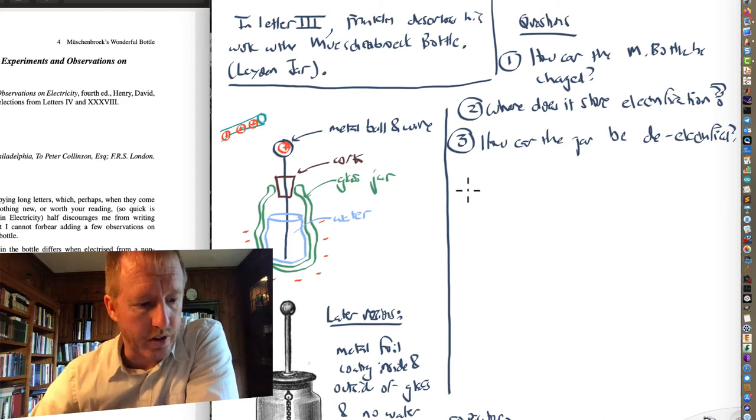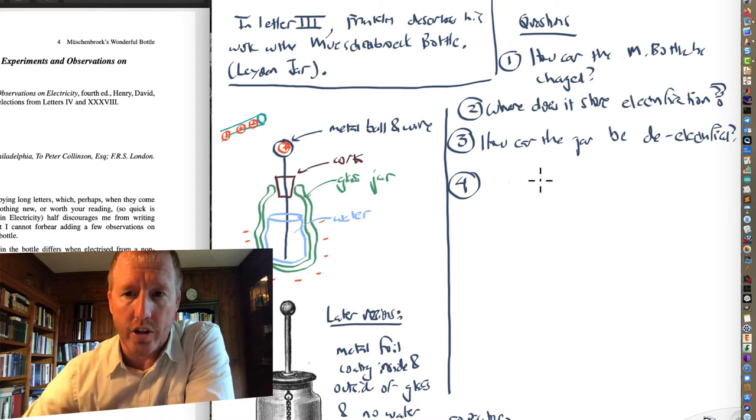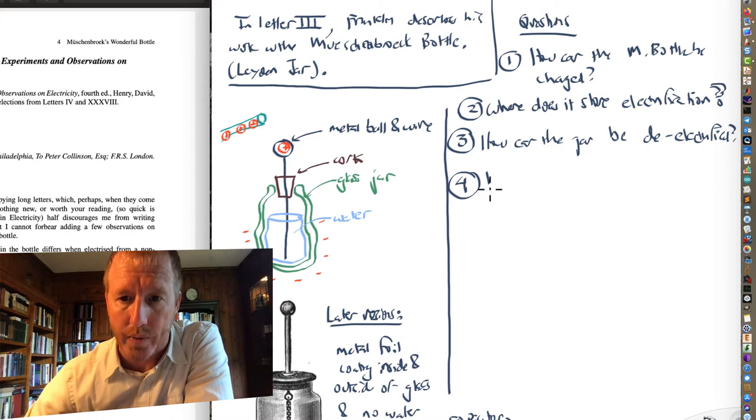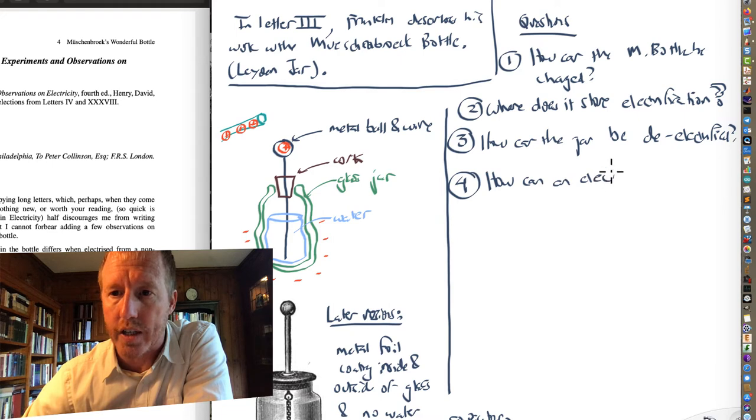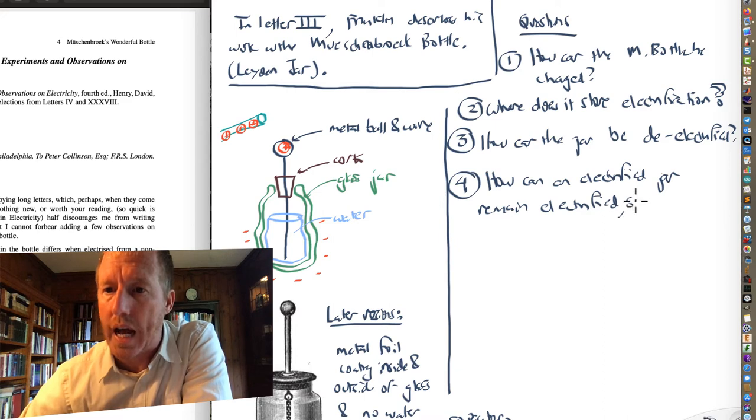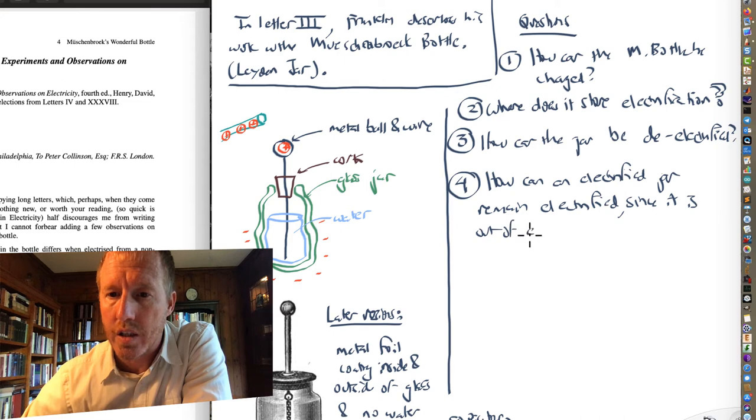And here's another question that's very interesting. How is it that a jar like this can remain in a static state so far out of equilibrium? Or in other words, how can an electrified jar remain charged, remain electrified, since it is out of equilibrium?